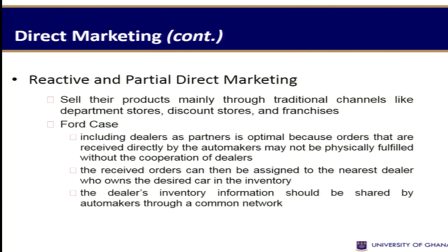In reactive or partial direct marketing, you sell your products through traditional channels like department stores, discount stores, and franchises. Take a company like Ford — they include their dealers as partners, which is optimal because orders received directly by automakers may not be fiscally fulfilled without the cooperation of these dealers. The received orders can then be assigned to the nearest dealer who owns the desired car in their inventory, and the dealer's inventory information should be shared by the automakers through a common network.